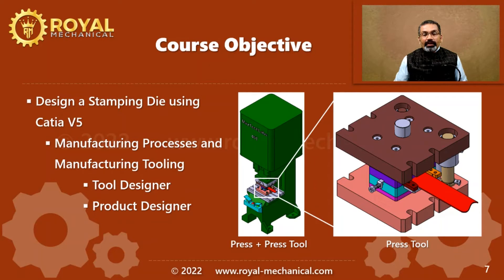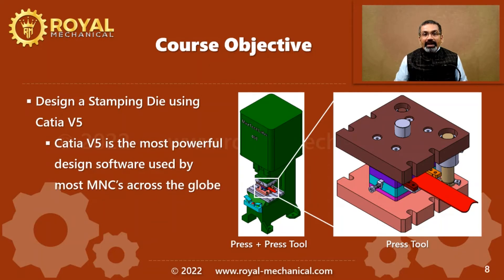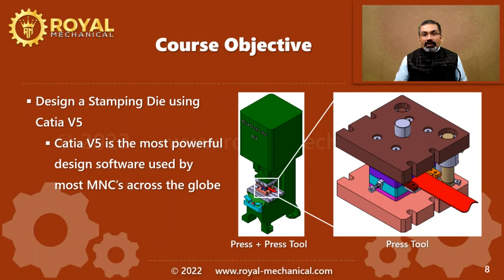He can also become a better product designer. Why should you learn CATIA V5? As I had mentioned in my previous video, CATIA V5 is an employable skill. If you learn CATIA V5, your chances of getting a job increase. CATIA V5 is also the most powerful and most popular design software used by many multinational companies across the globe.